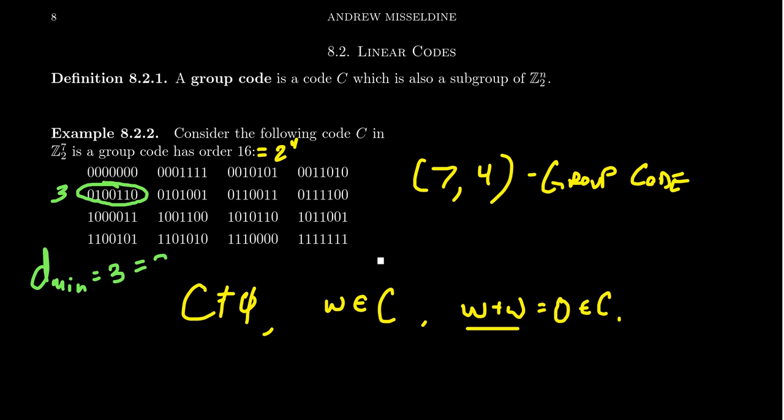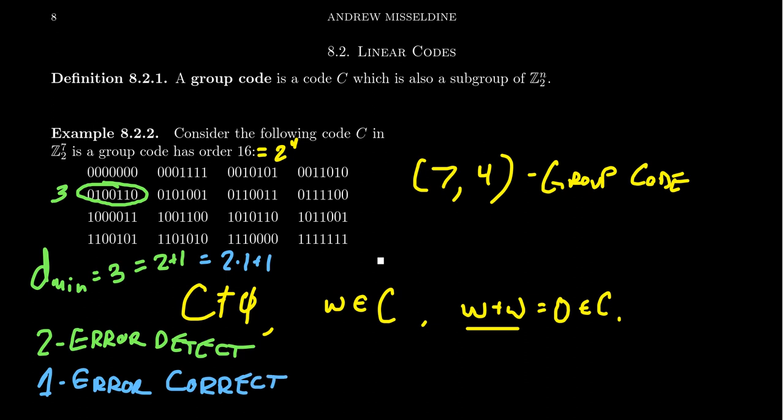Which, remember, 3 can be written as 2 plus 1. Therefore, that tells us we can detect up to 2 errors. That's a 2 error detection level. And then likewise, 3 can be written as 2 times 1 plus 1. So this code has the ability to correct up to 1 error in transmission. So we can determine these specifics of the code by looking at the minimum weight, and the connection between minimum weight and minimum distance comes from the fact that it's a group code.